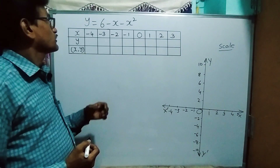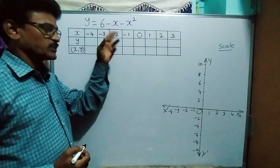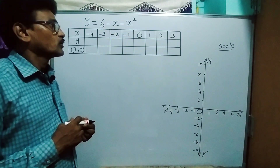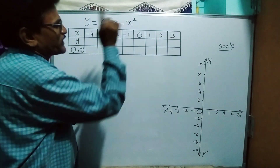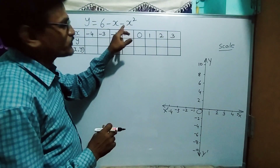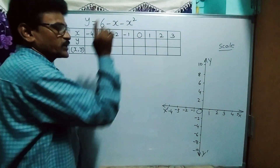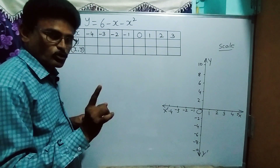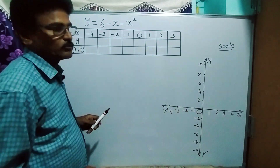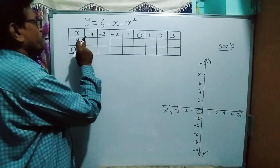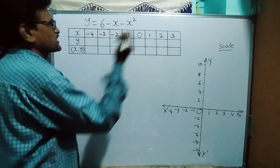Now I am taking a second example: y = 6 - x - x². For this polynomial, we will find the zeros by plotting the graph. The x² coefficient is -1. As I mentioned earlier, if the x² coefficient is negative — that is, 'a' is less than 0 — the parabola opens downward. We will see that now.